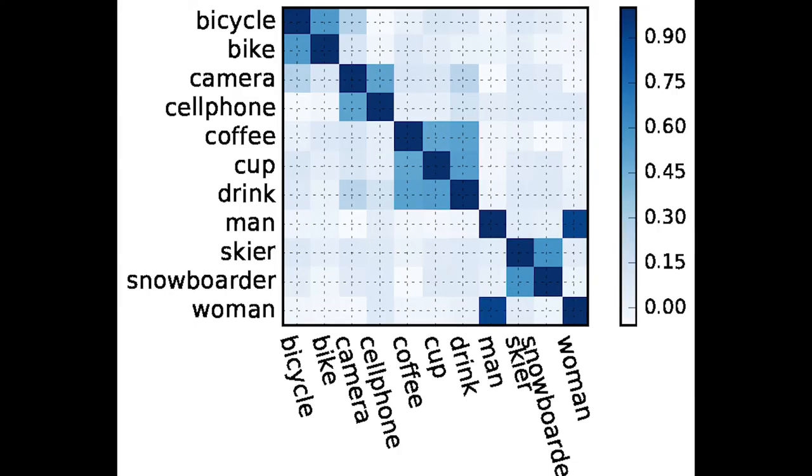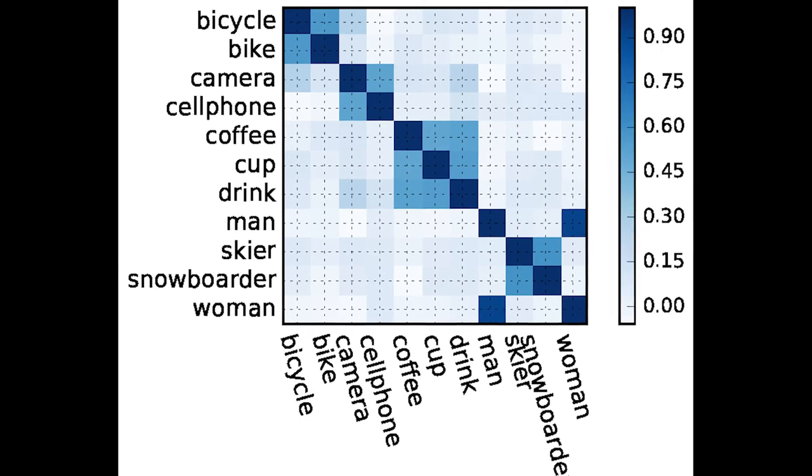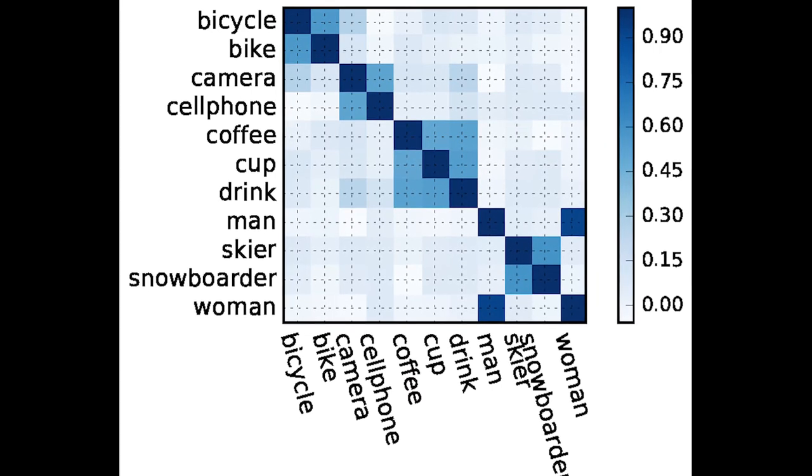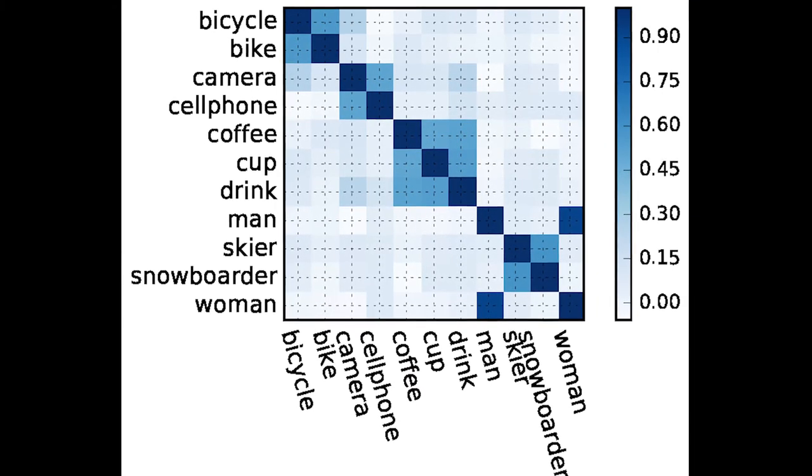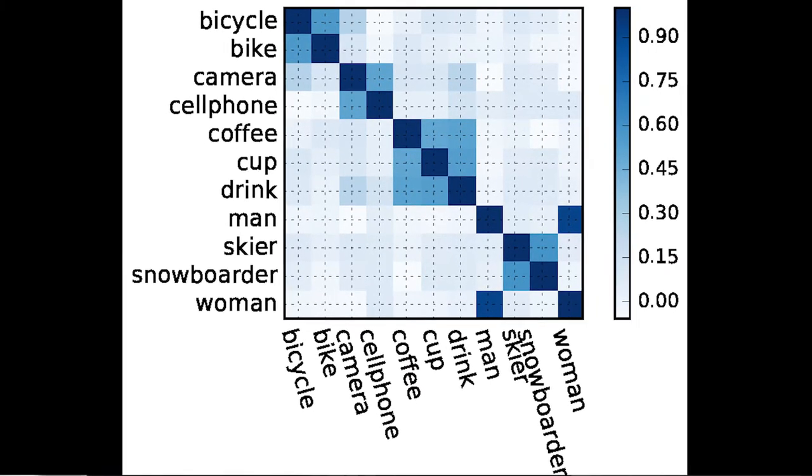Beyond that, we demonstrate that the trained parameters of our model can be used as word embeddings which capture spatial image relationships and provide interpretability.